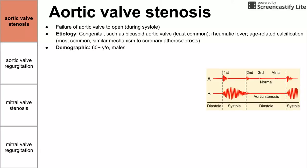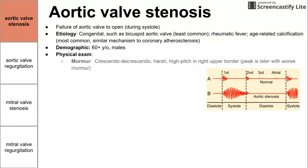The demographic for aortic valve stenosis is usually older people, usually males — very similar to coronary atherosclerosis. On physical exam, we hear a crescendo-decrescendo murmur, meaning it increases in intensity and then decreases. The point of maximum intensity in murmurs corresponding to worse disease peaks later, so we see that peak in the murmur later with worse disease.